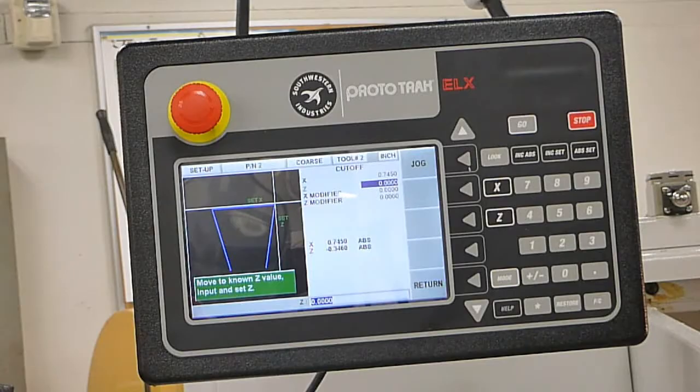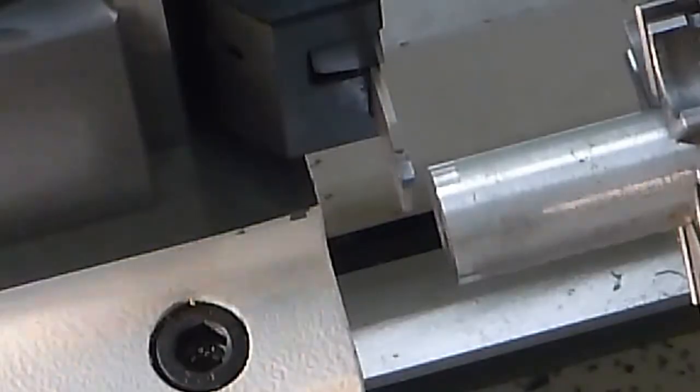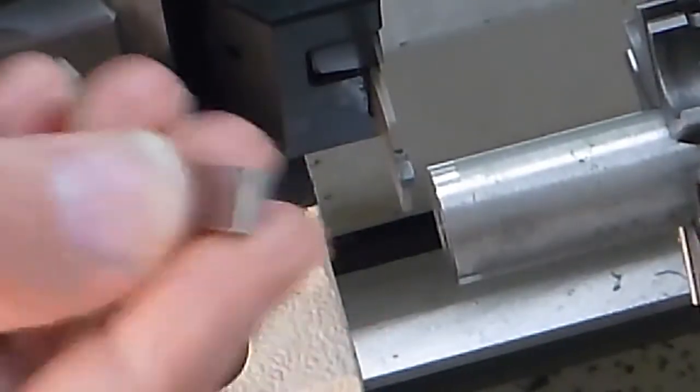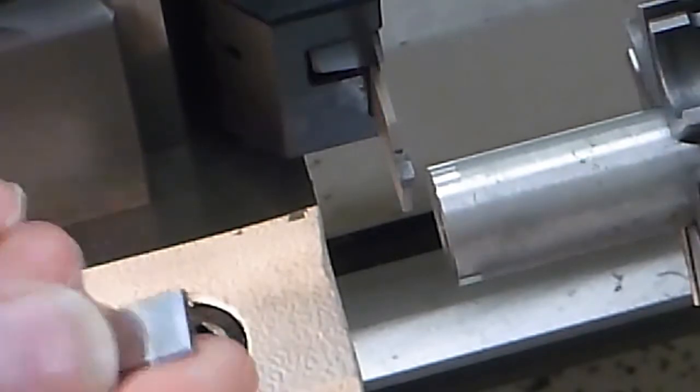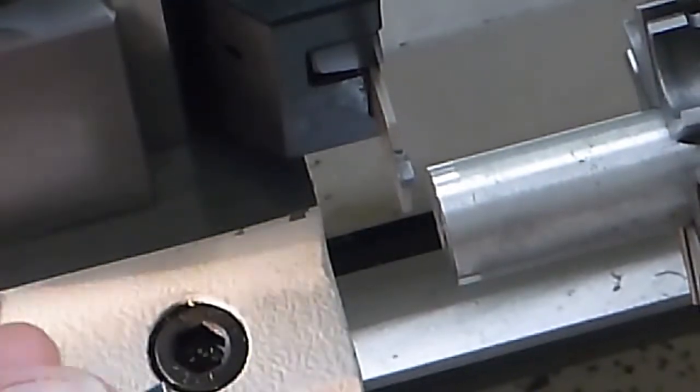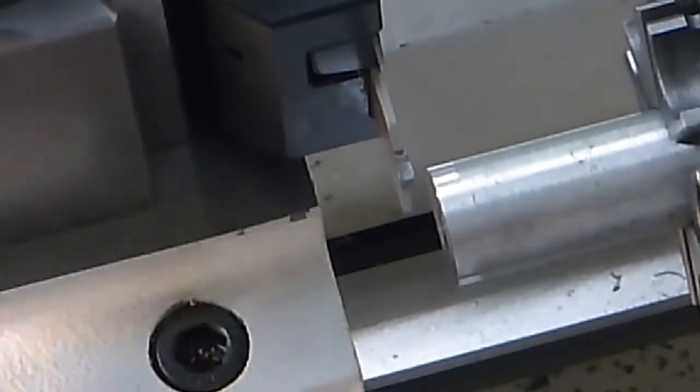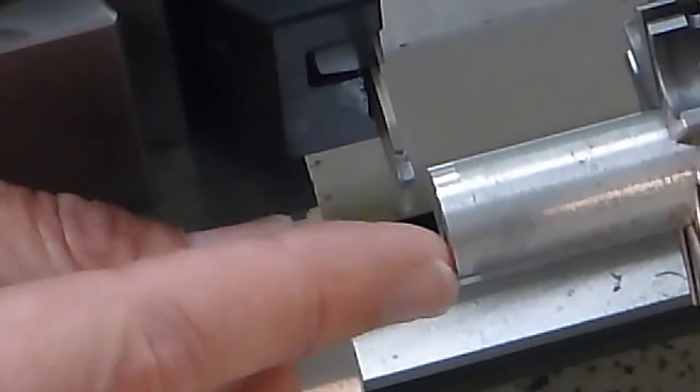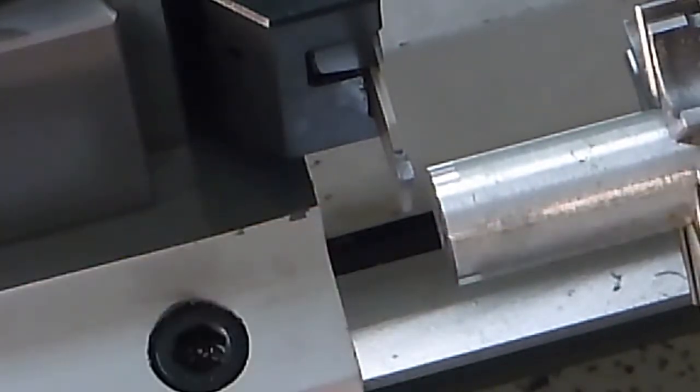Now we're going to set the z. For setting the z-axis, I like to use a known height of a block. This is a gauge block. You can also use other things as long as it's a nice ground surface. We had already established this base here to be z0 with tool number one. So what we need to do now is find out the position of this one.